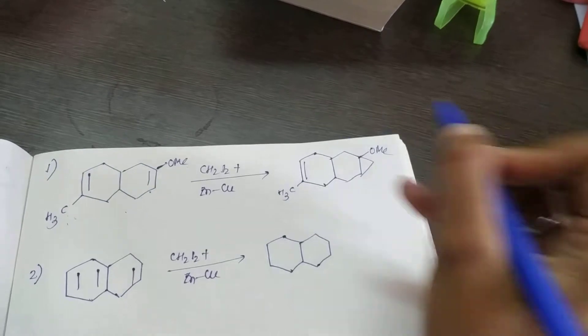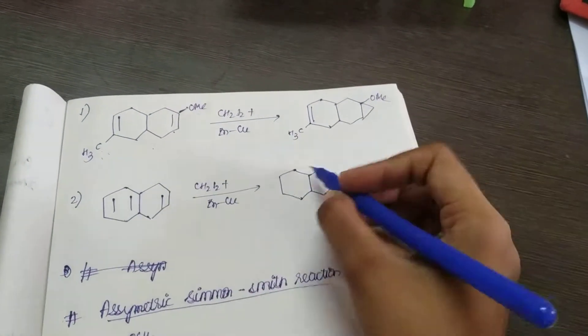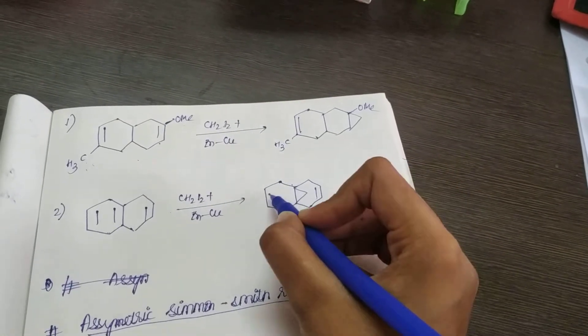here the double bond will remain as such. In the second example, you see the double bond is rich in this region, so in this case you will form this cyclopropane ring and the rest will remain the same.